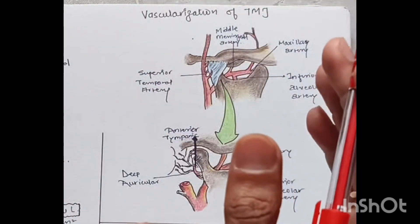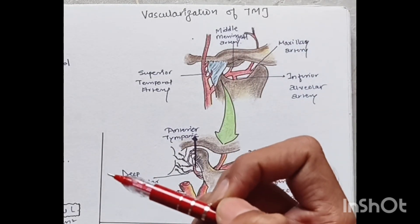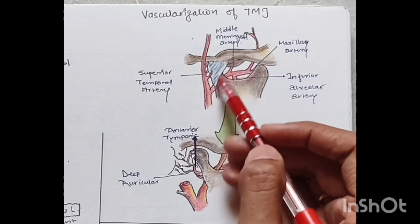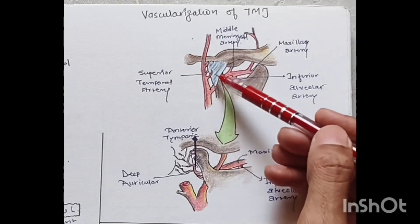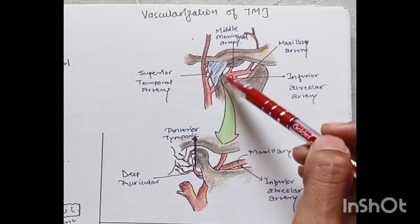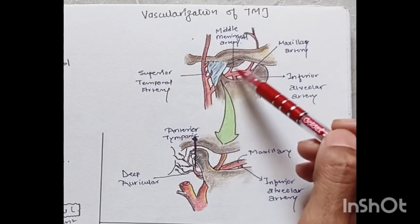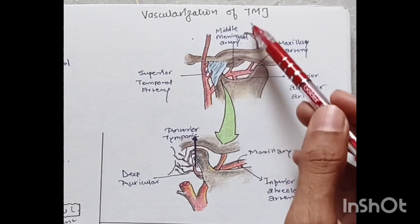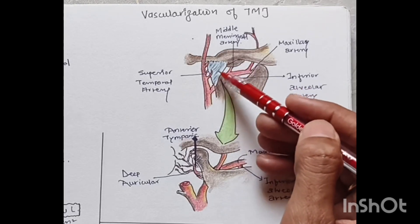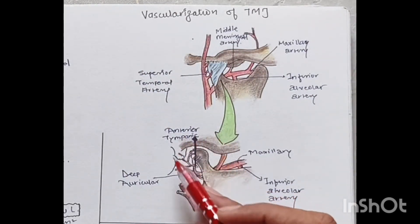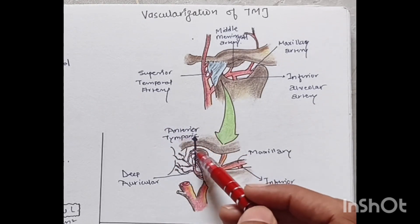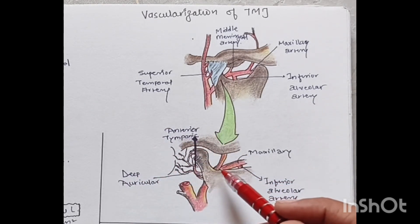For vascularization, the TMJ is surrounded posteriorly by the superficial temporal artery, inferiorly by the maxillary artery, and anteriorly by the middle meningeal artery. Inside the TMJ, removing the ligaments, it is supplied by the anterior tympanic branch and the deep auricular branch of the maxillary artery.